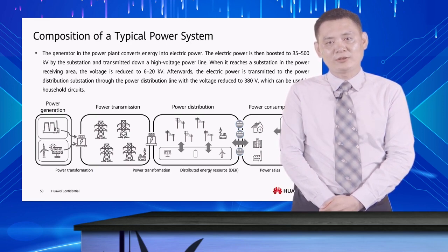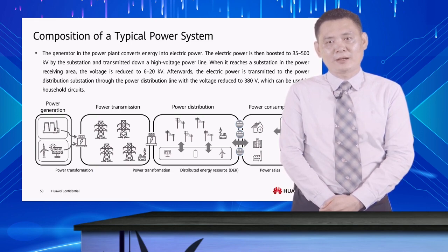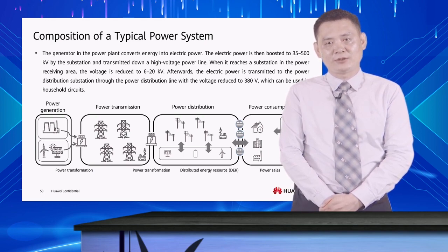When it reaches a substation in the power receiving area, the voltage is reduced to 6 to 20 kV. Afterwards, the electric power is transmitted to the power distribution substation through the power distribution line, with the voltage reduced to 380 V, which can be used in household circuits.